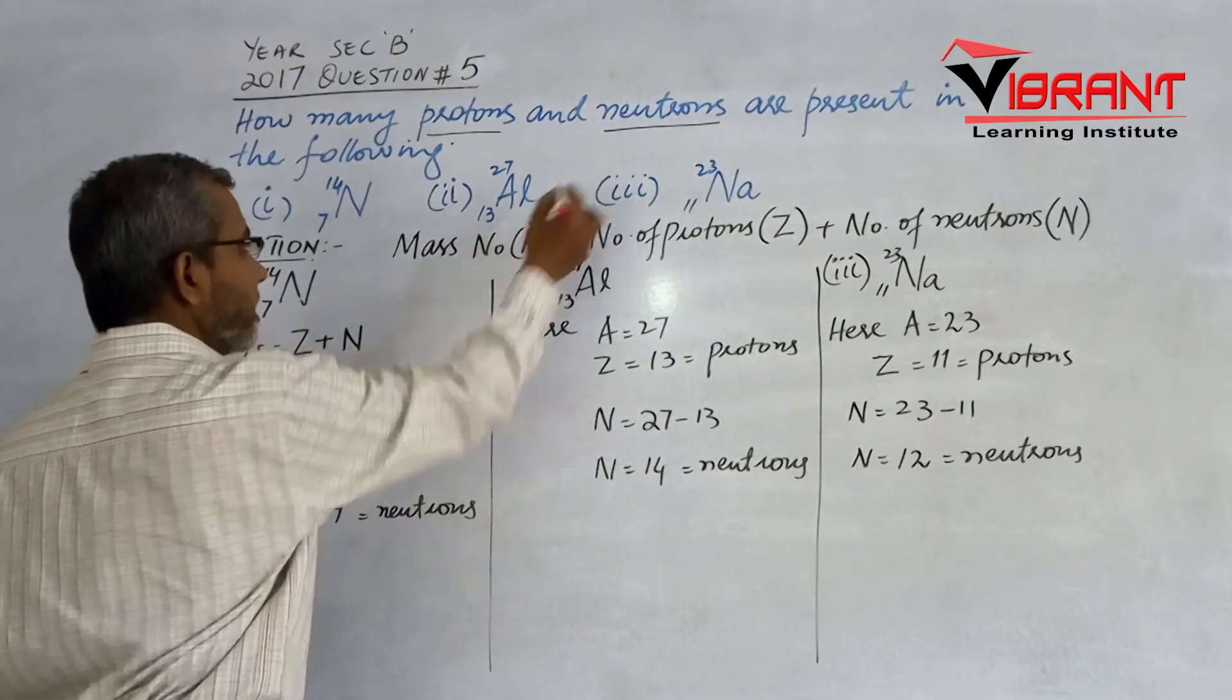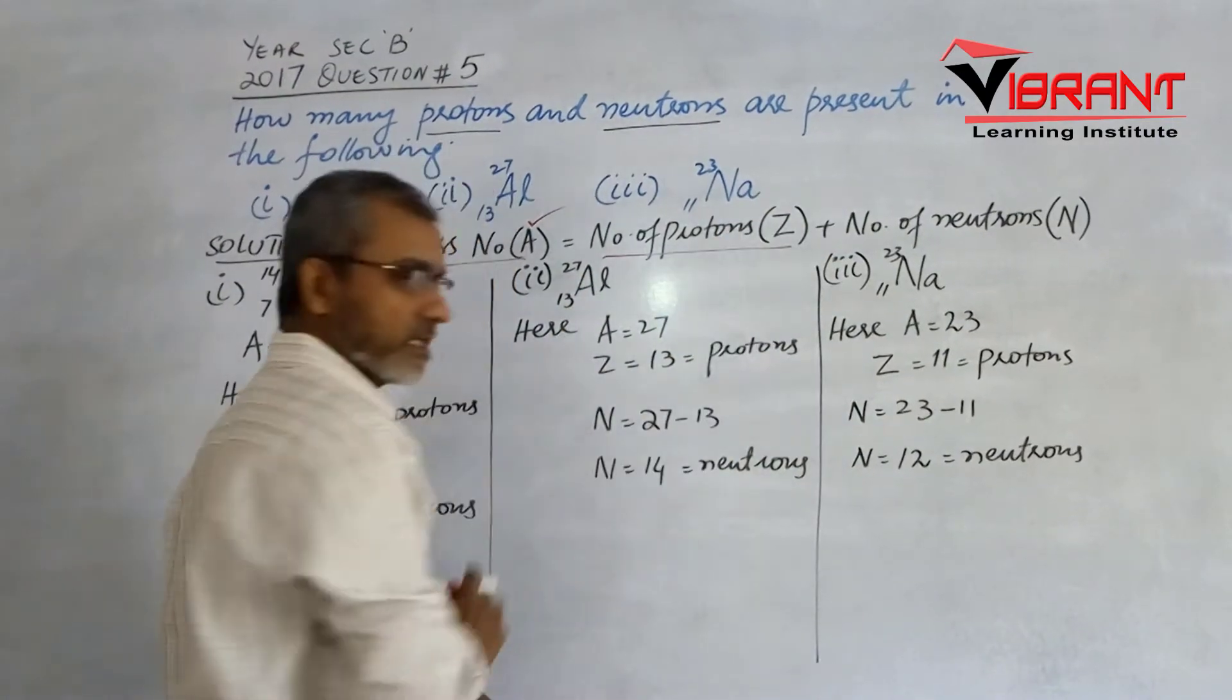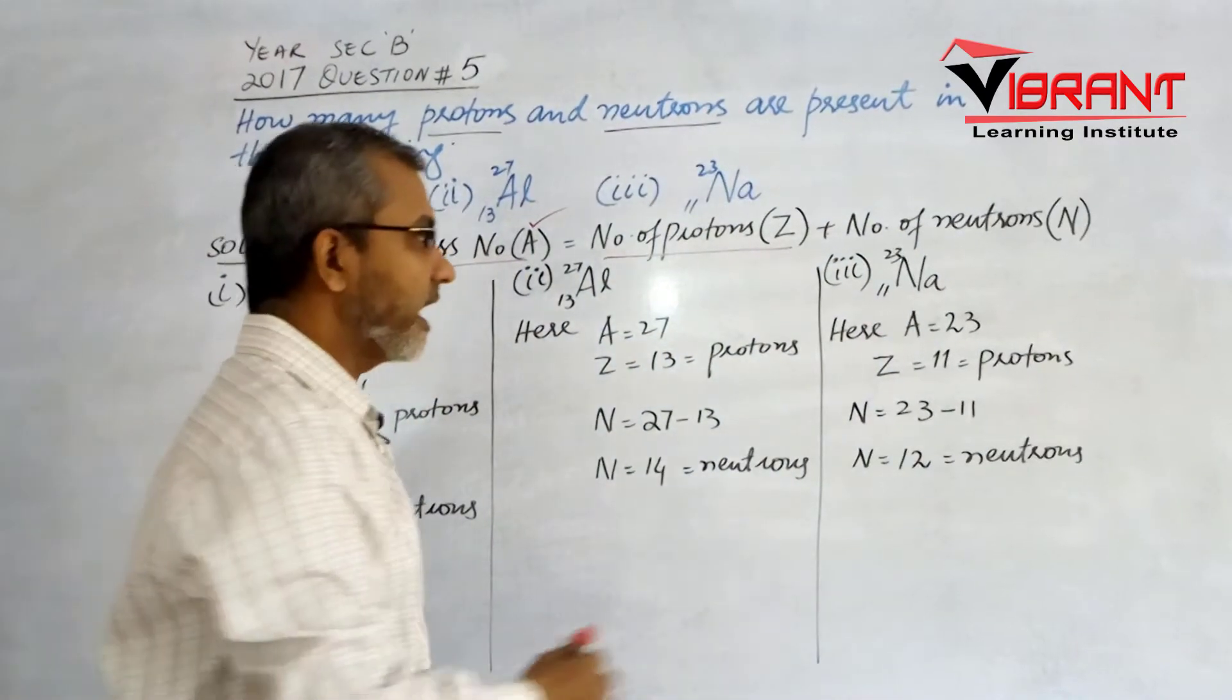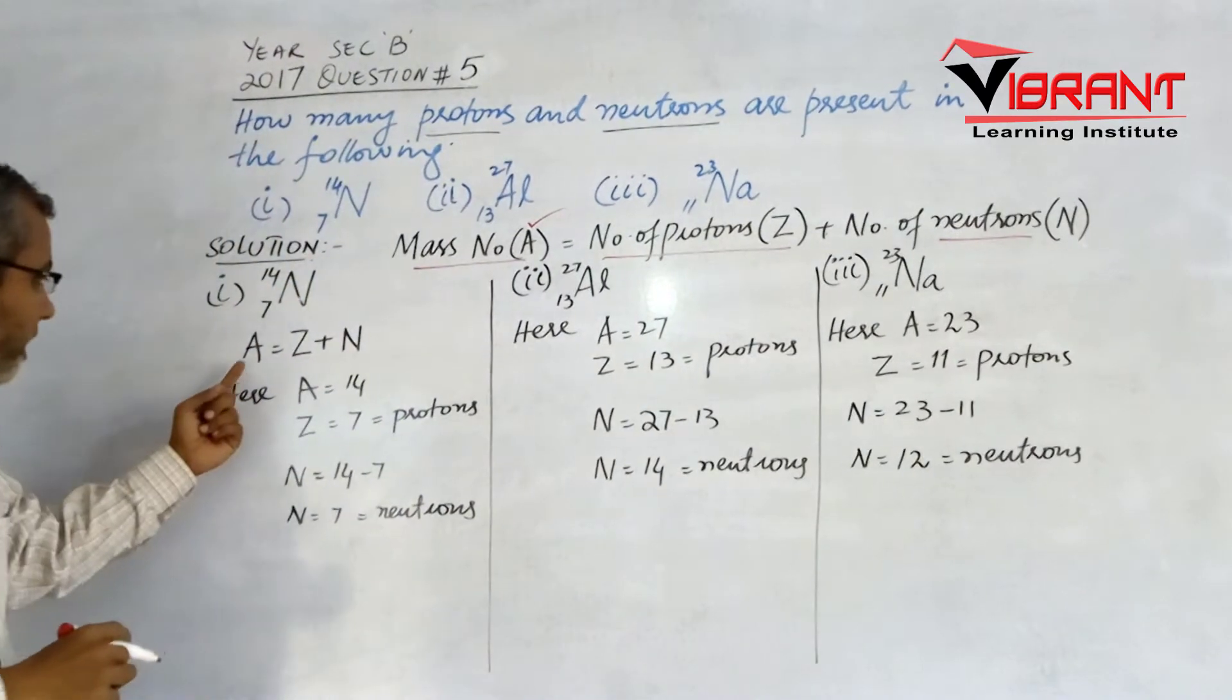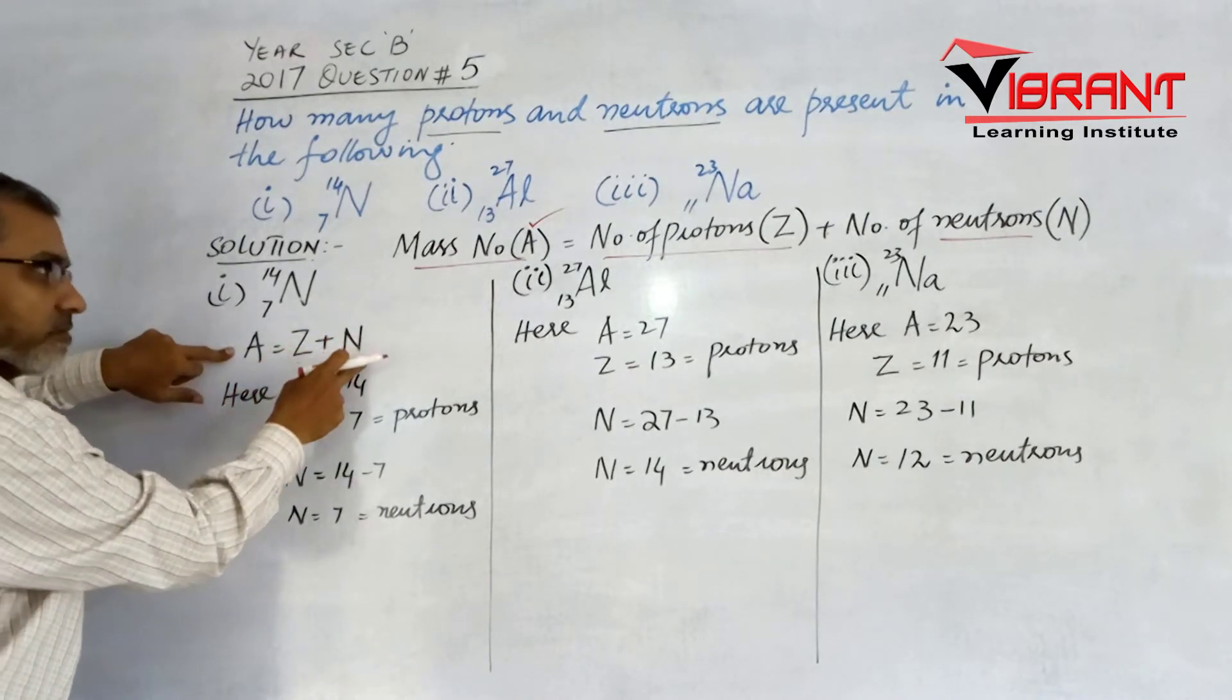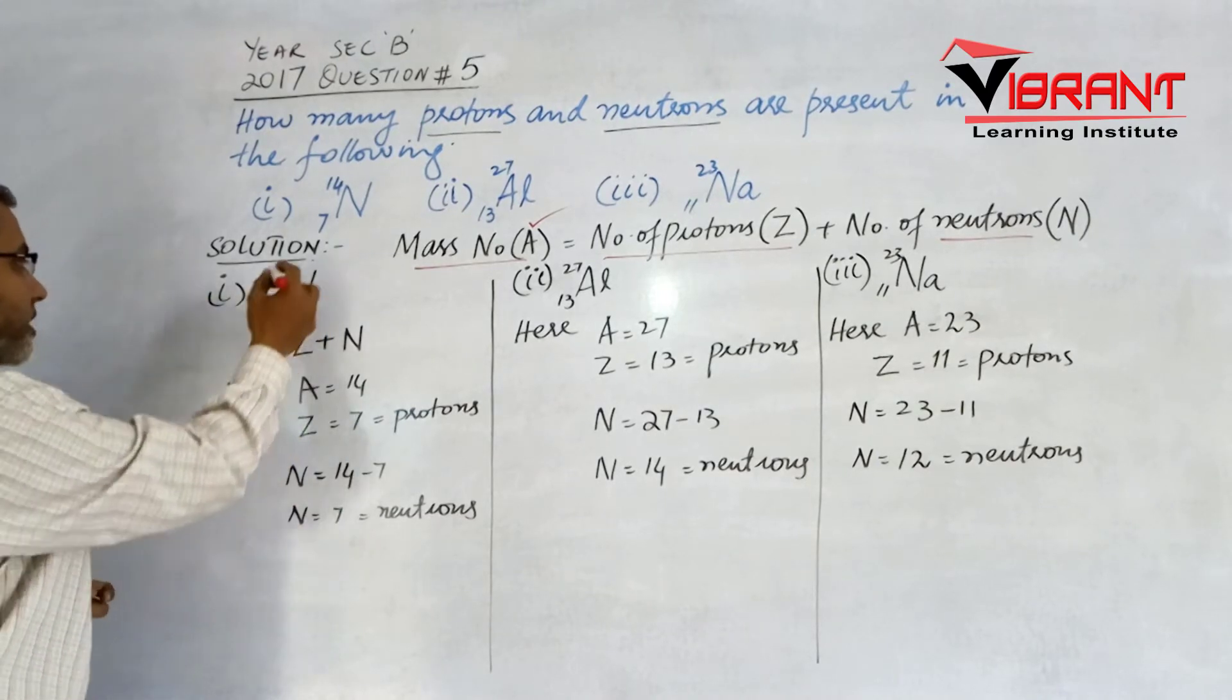The formula is A = Z + N, where A is the mass number, Z is the number of protons, and N is the number of neutrons.